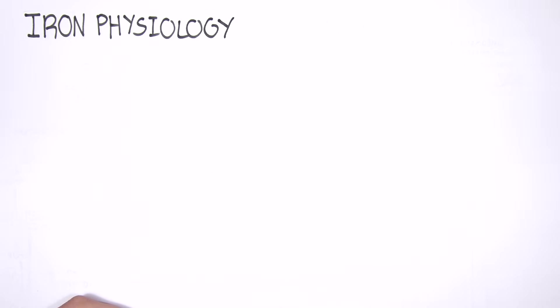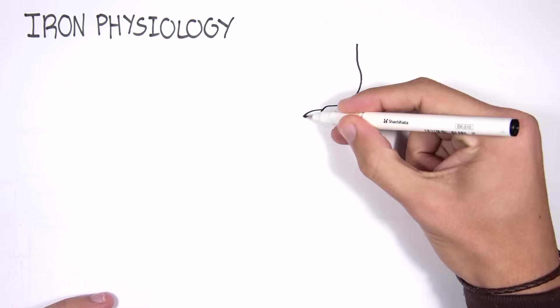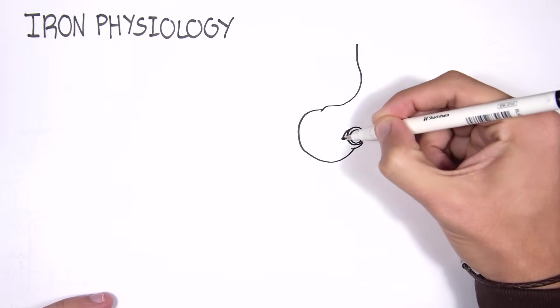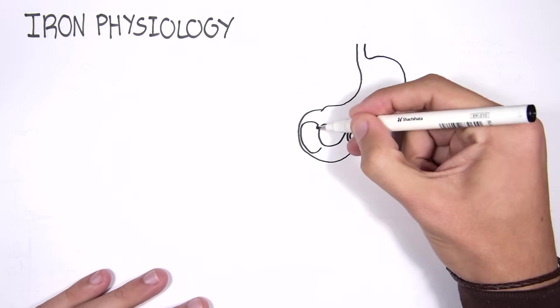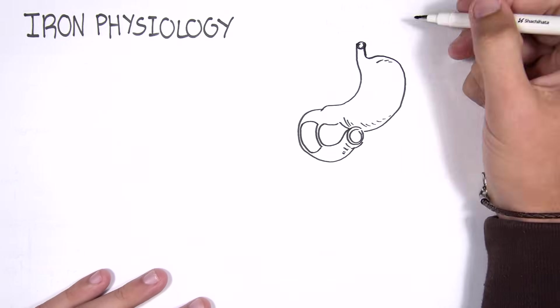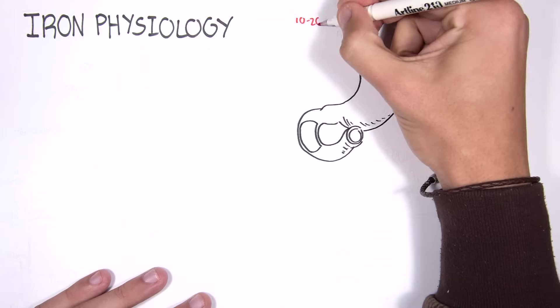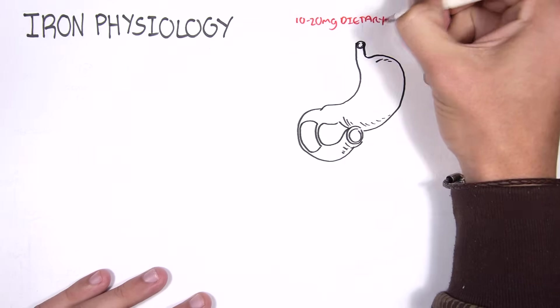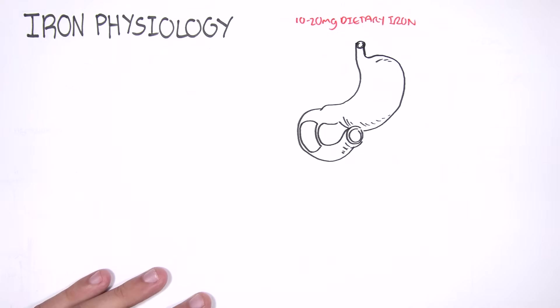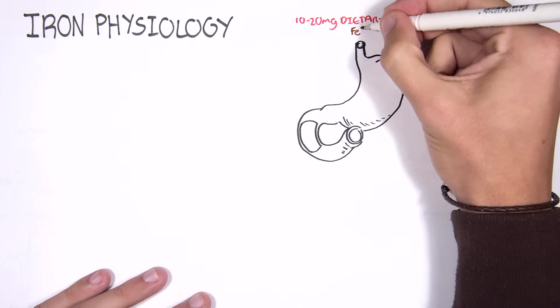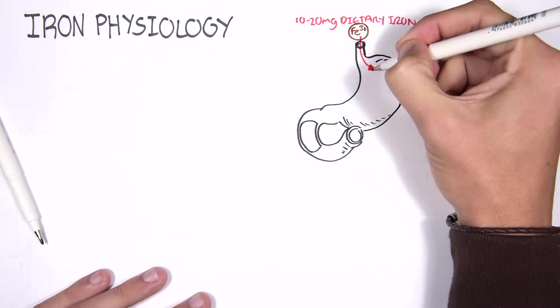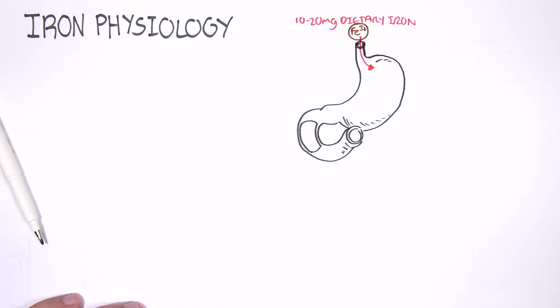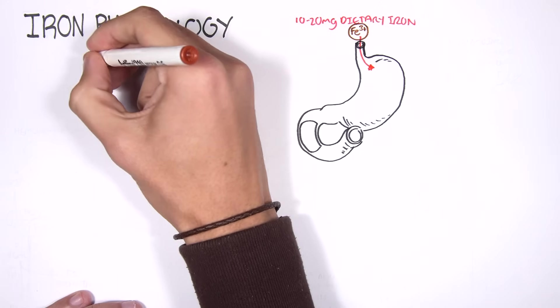Iron is an essential element, metal, that we need in our body to perform many physiological processes. We get our iron by eating food. Our daily dietary requirement of iron is between 10 to 20 mg. So here I'm drawing iron as Fe3+, because Fe is the chemical symbol for iron. Iron goes down the esophagus into the stomach and then will travel into the small intestine where it will be absorbed.